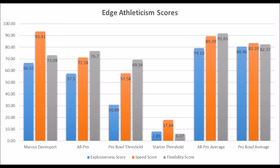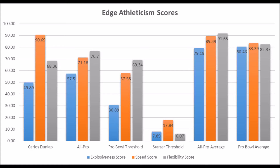The best data comparison I could find for Marcus Davenport is Jason Pierre-Paul. Pierre-Paul had a 55.51 explosive/body strength score, 81.90 speed score, and 58.43 flexibility score — making Davenport essentially a more athletic version of Jason Pierre-Paul. Another comparable is Carlos Dunlap, who had a 49.89 explosive/body strength score, 90.69 speed score, and 68.36 flexibility score. Both players have had very productive careers as edge rushers at the NFL level.